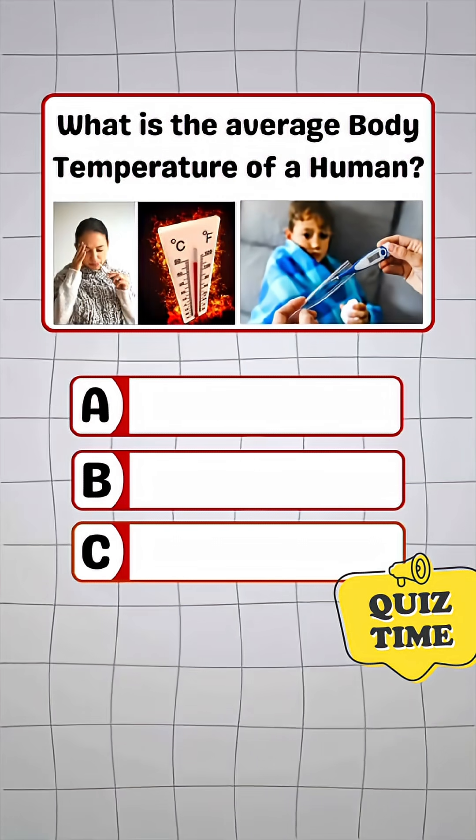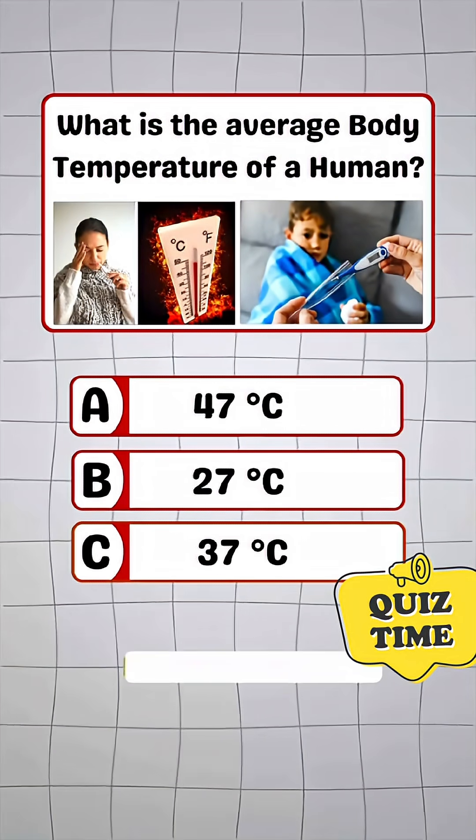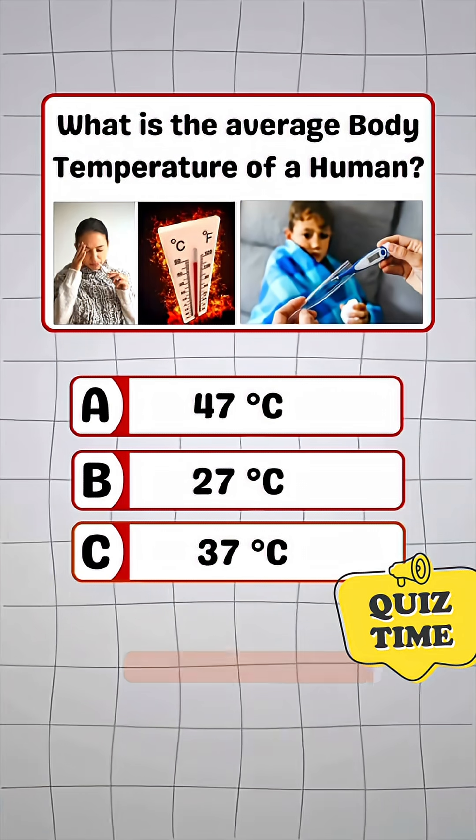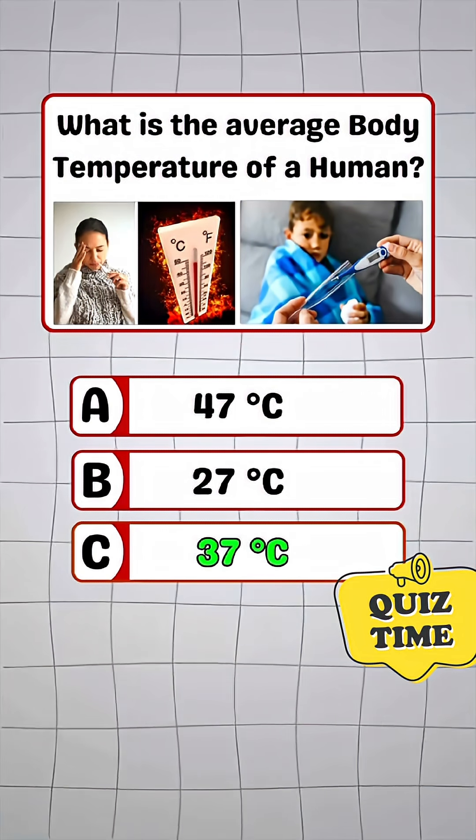Question 5. What is the average body temperature of a human? Answer C. 37 degrees Celsius.